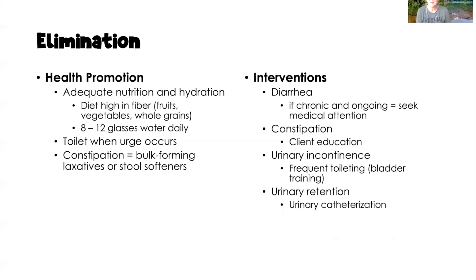From a health promotion perspective, we want to promote adequate nutrition and hydration. A high-fiber diet — including fruits, vegetables, and whole grains — helps prevent constipation, along with eight to twelve glasses of water daily. Other things we can do to promote elimination include toileting when the urge occurs — don't hold in urine or stool. For constipation, bulk-forming laxatives or stool softeners can help provide consistency with bowel movements.